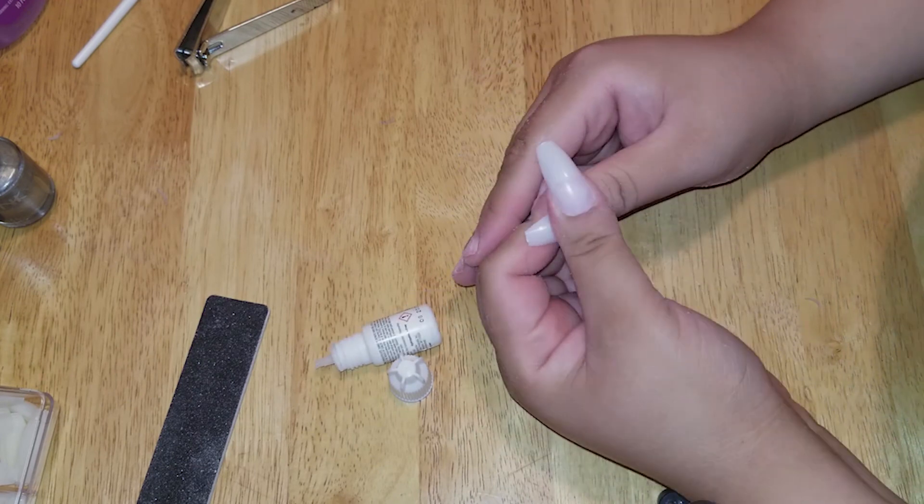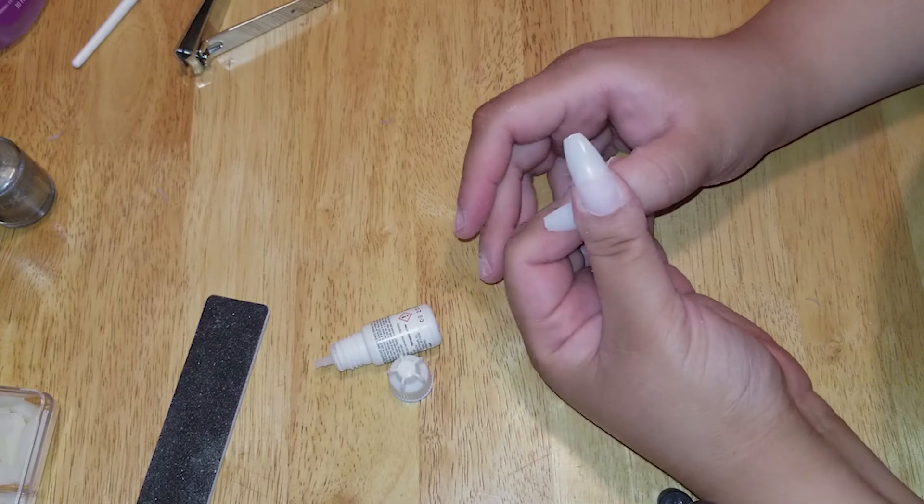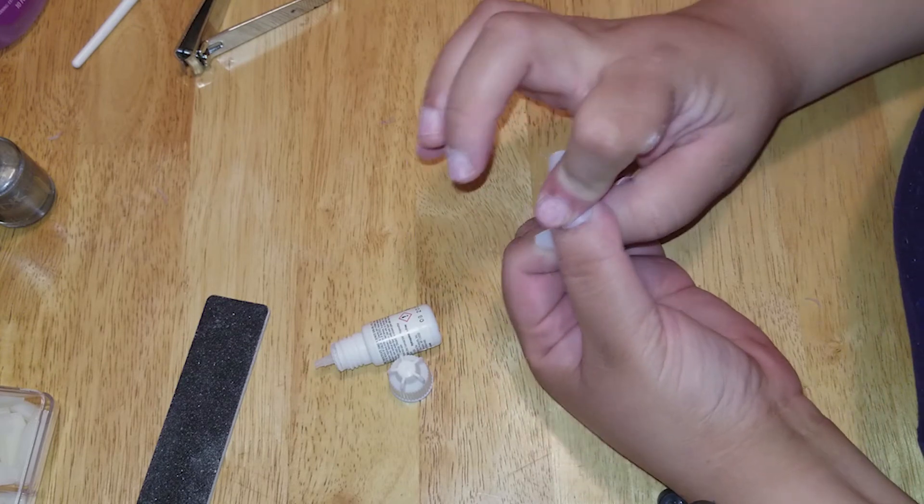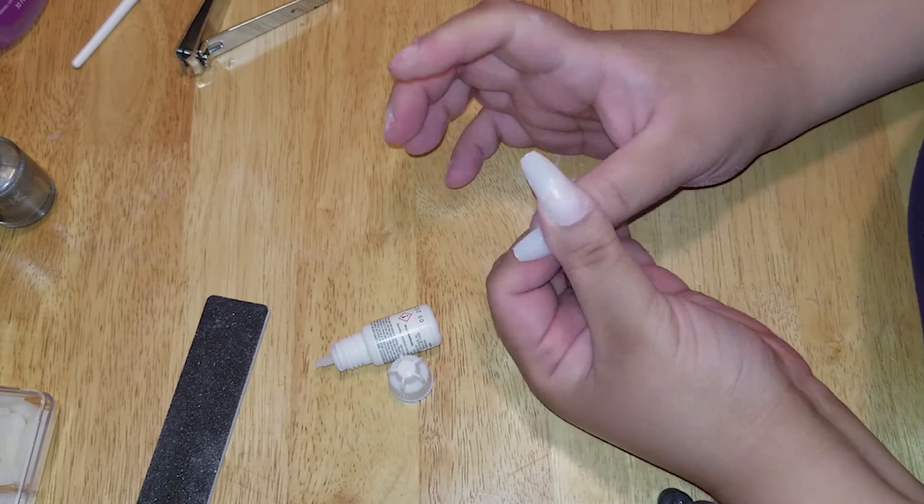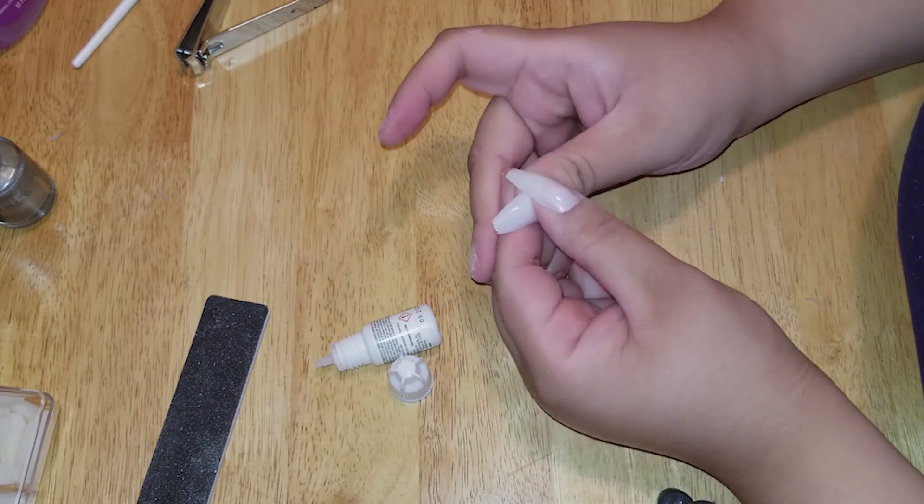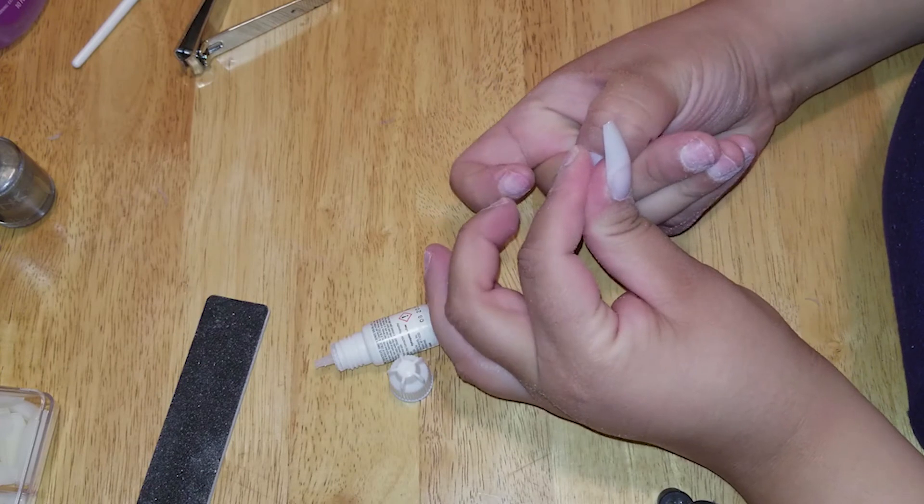So as you put the glue, try to press on your fingernails for like 20 seconds so it can get all the air out and when it's nice and tight, no air or water can get in there.